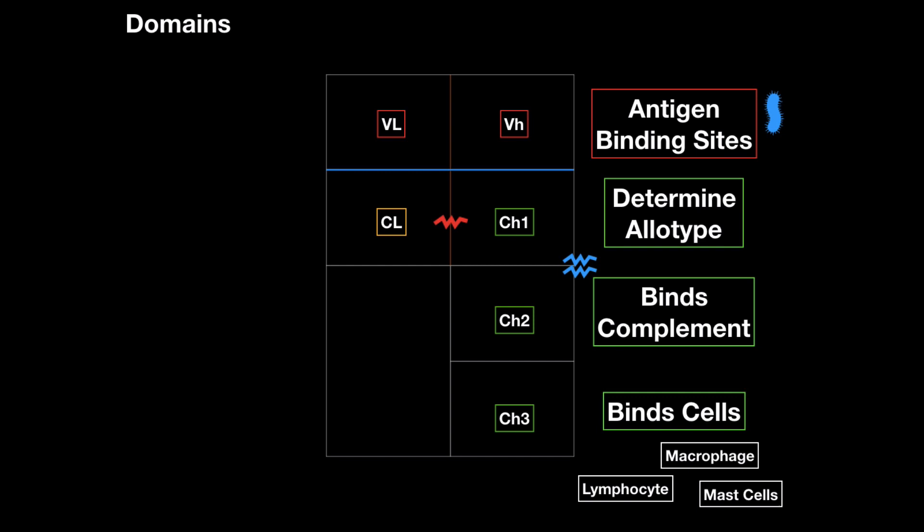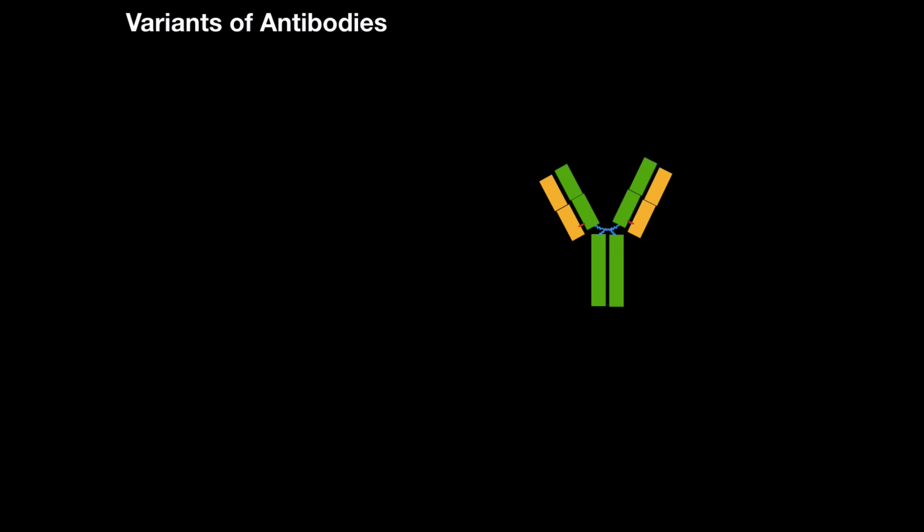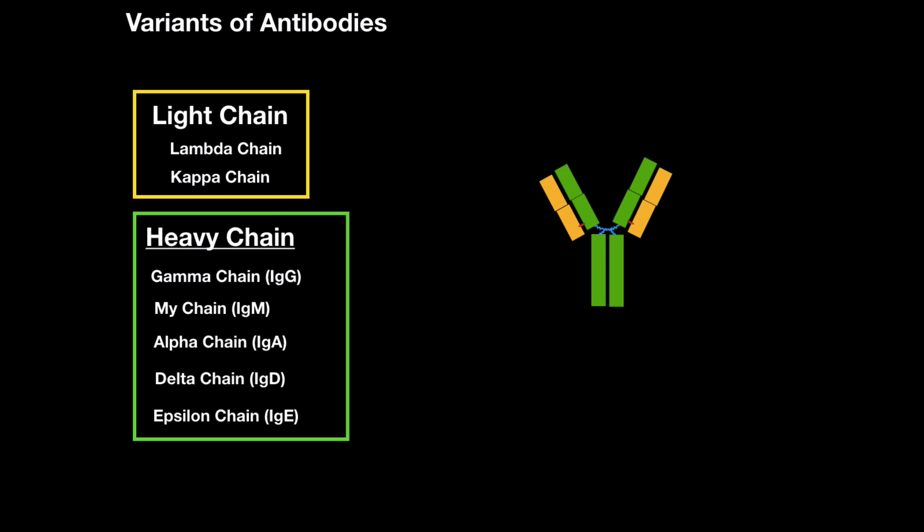Now, this is the most important part. Antibodies have different variants of chains. The light chain, here in yellow, can be either lambda chain or kappa chain. There's really no functional difference between them. But the heavy chain, though, this is the most important part because we're going to have five different types of immunoglobulins in our body, at least what we know of.